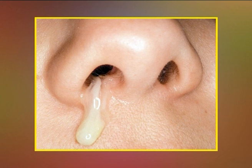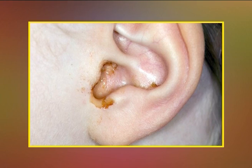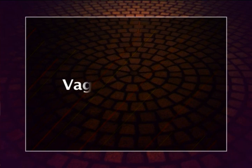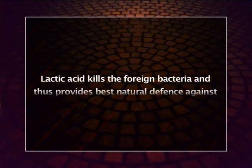Nasal secretions destroy harmful foreign germs with their lysozymes. Cerumen, or earwax, is a brownish secretion from the ceruminous glands into the auditory canal; it traps dust and bacteria, contains an effective antibacterial component, and also prevents entry of insects. Certain bacteria normally live in the vagina and produce lactic acid from glycogen of cells that periodically break off from the mucous membrane. This lactic acid kills foreign bacteria and provides a natural defense against infection.